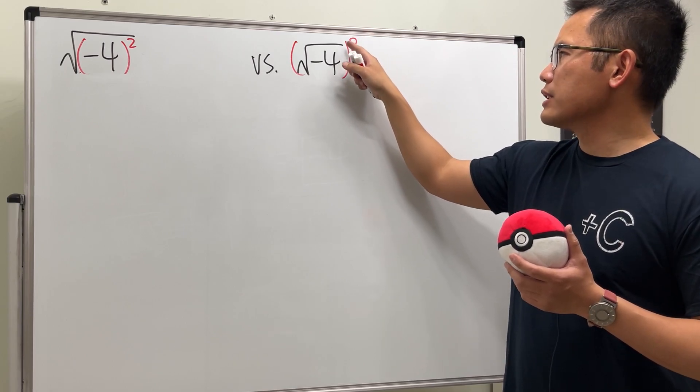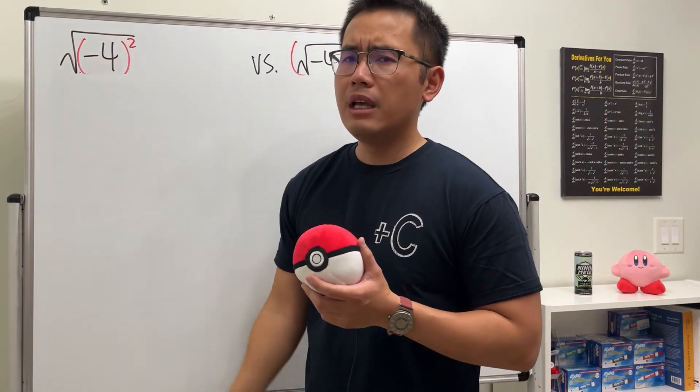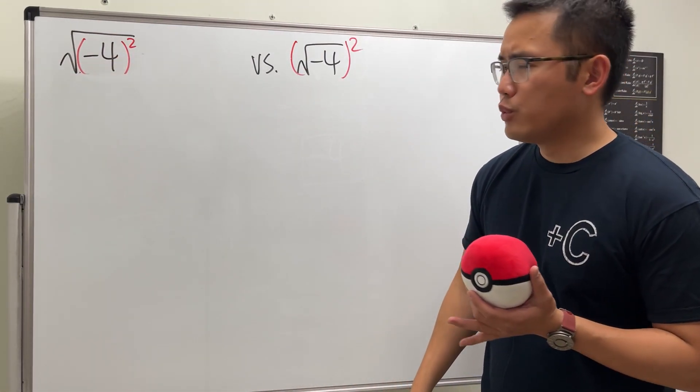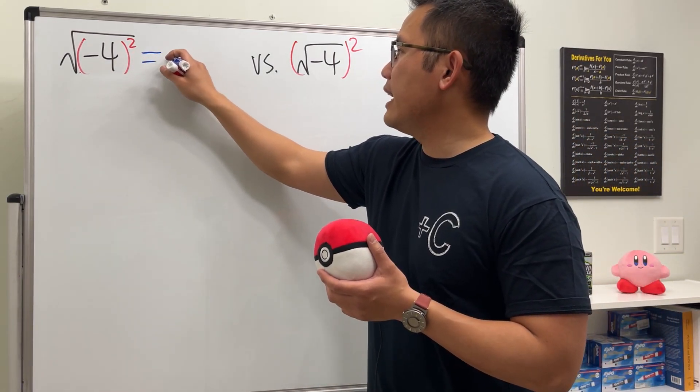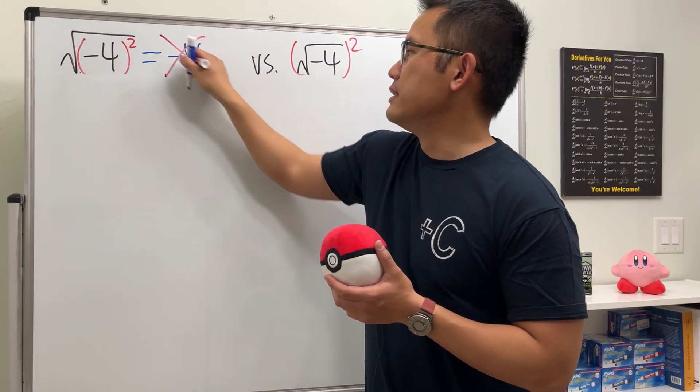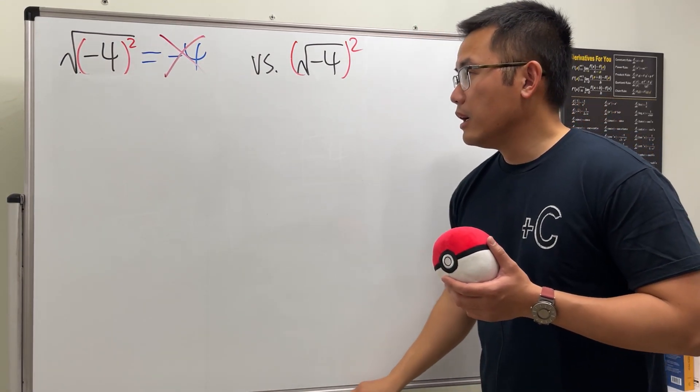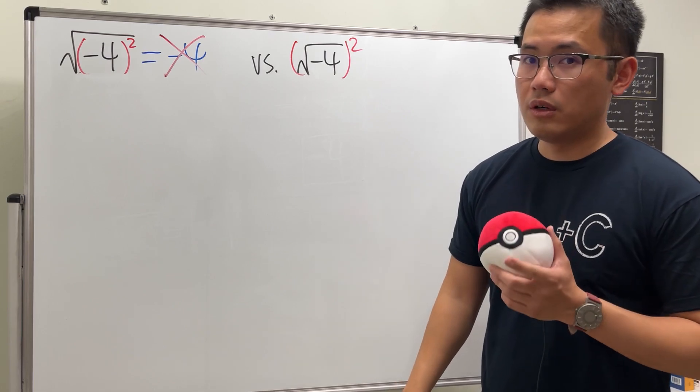But can we just cancel the square and square root for both of them? So both of them should just be equal to negative 4? No, that's not correct, especially if you look at the first one and say that's equal to negative 4. This is not correct because we have to do the order of operation.